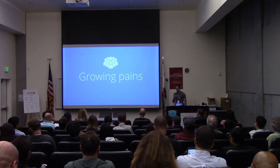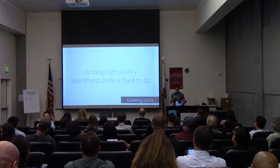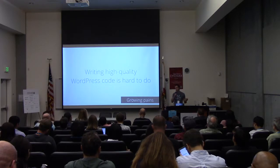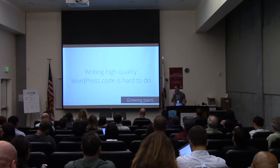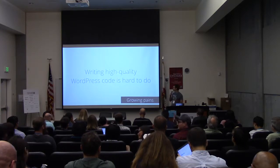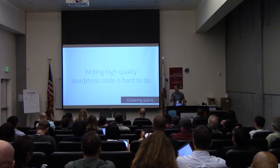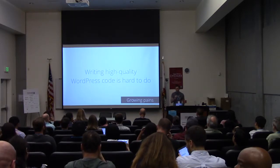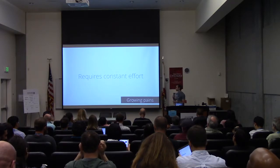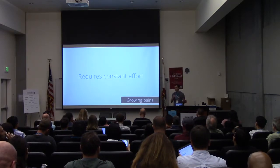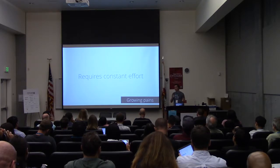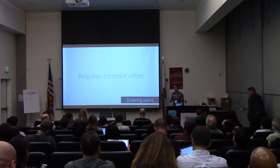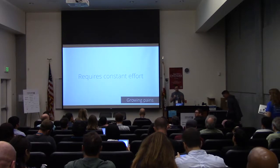So I want to start by talking about growing pains. We all want to write high-quality WordPress code. I don't think anybody here wants to wake up in the morning and say, I really want to write shitty code. Nobody wants to do that. And it's hard — it's actually really hard. It requires consistent alertness, constant effort on your part to decide: okay, I could do this really easy, gimmicky solution now, or I could take a bit more time and do it a bit better.